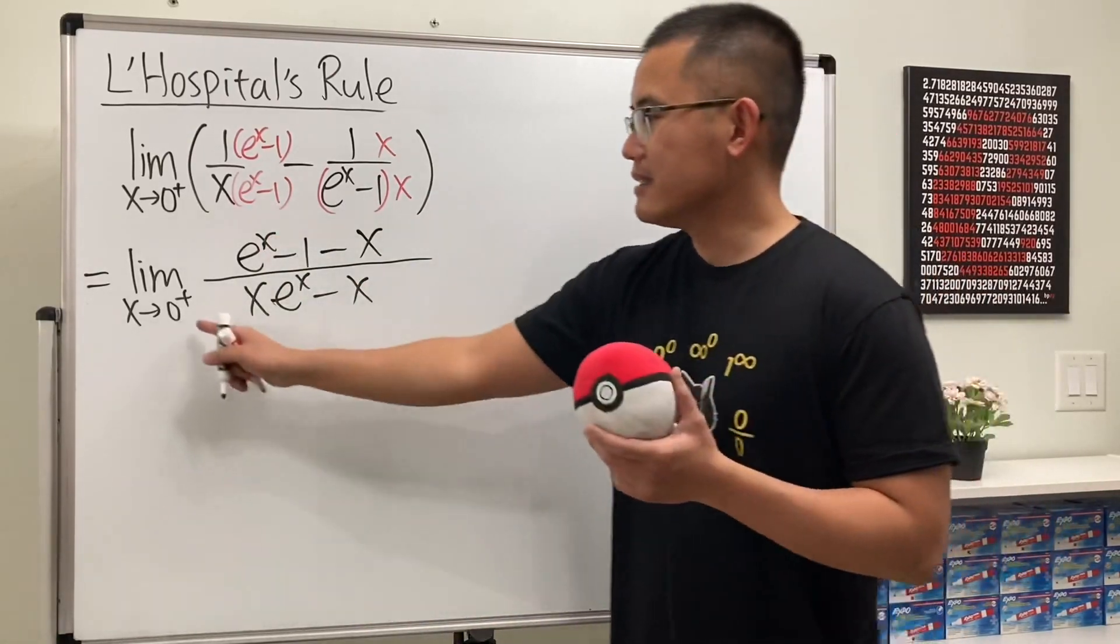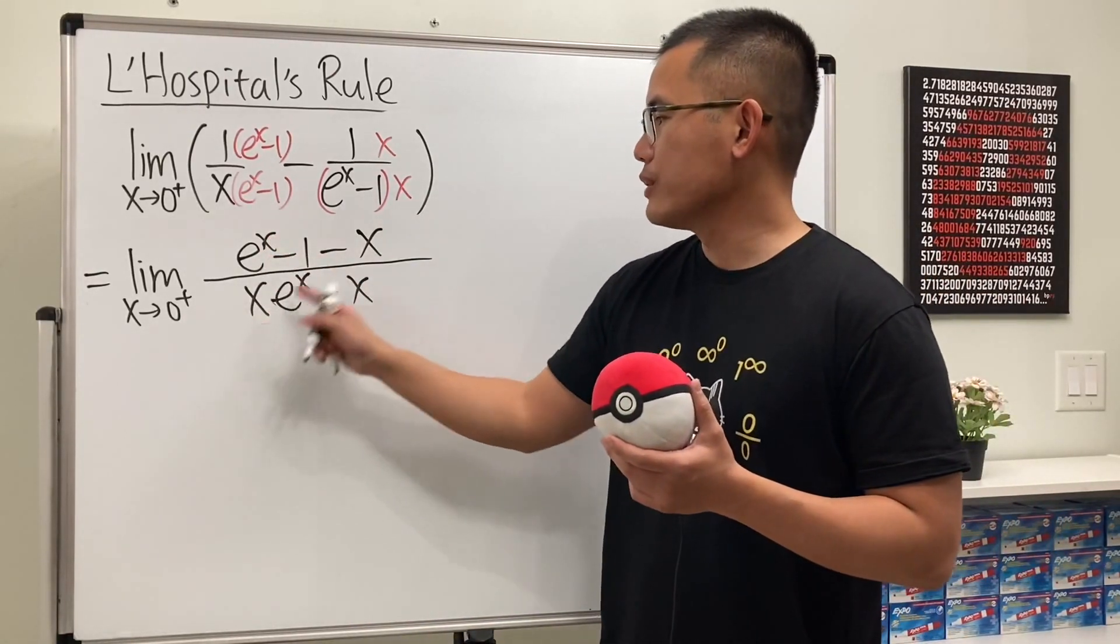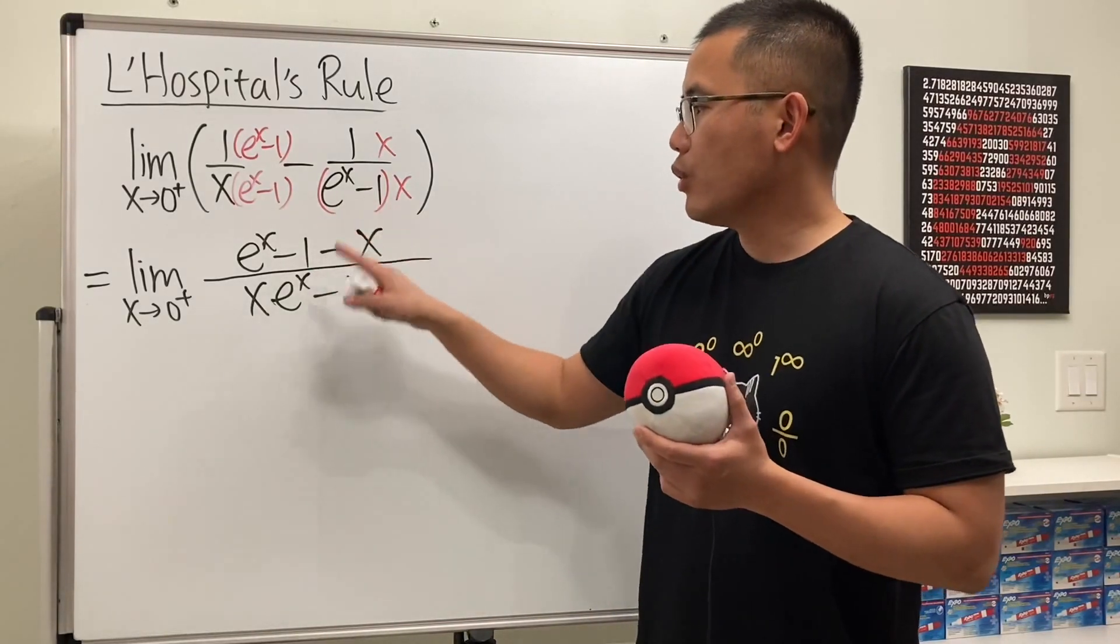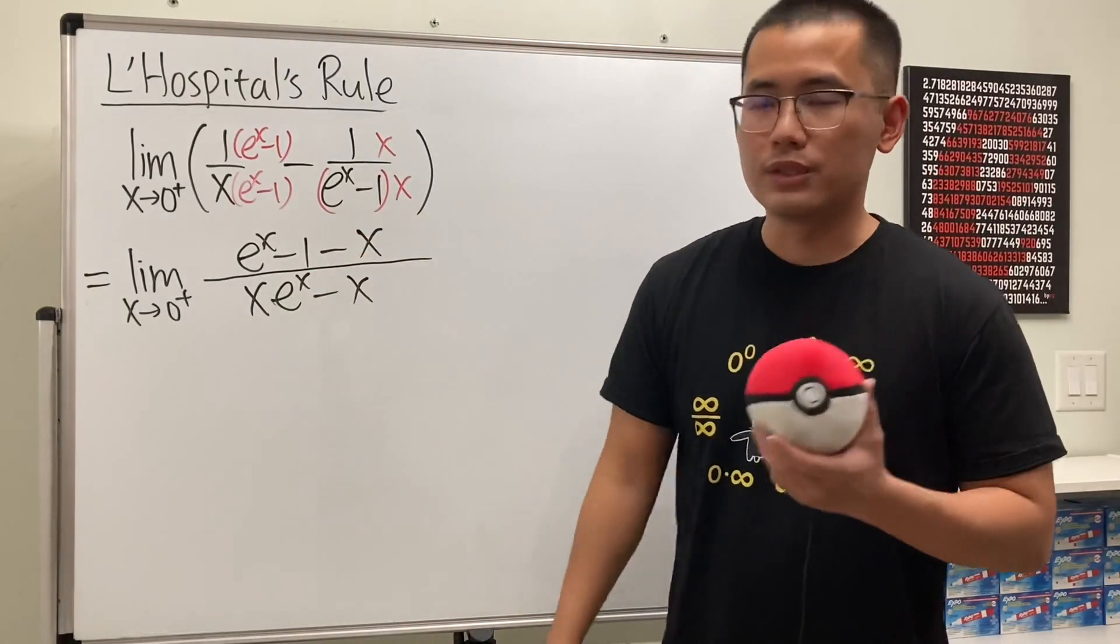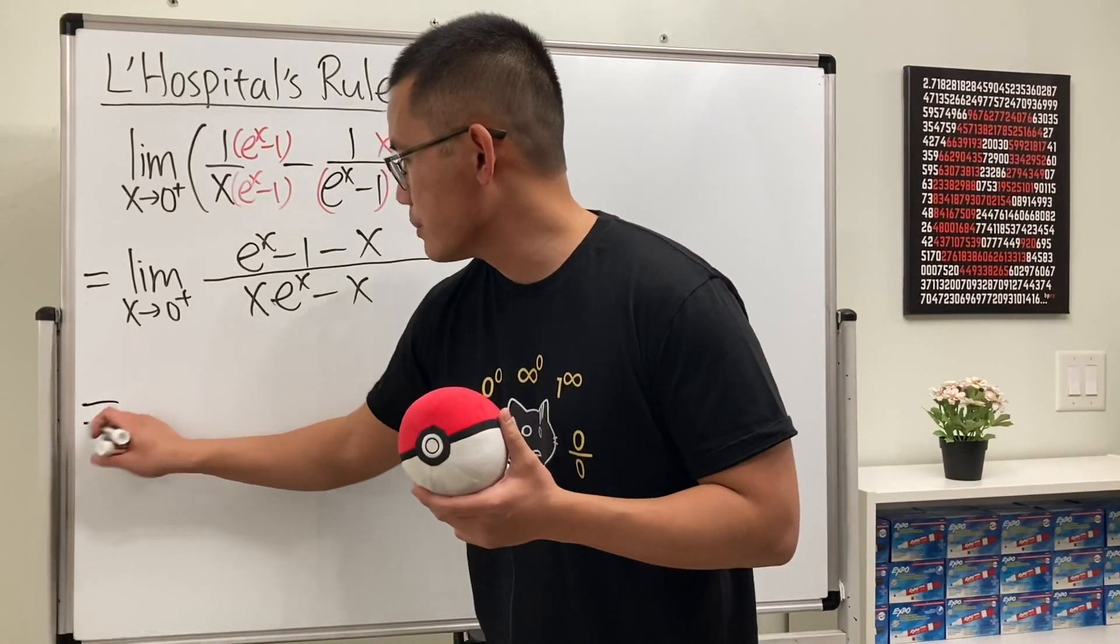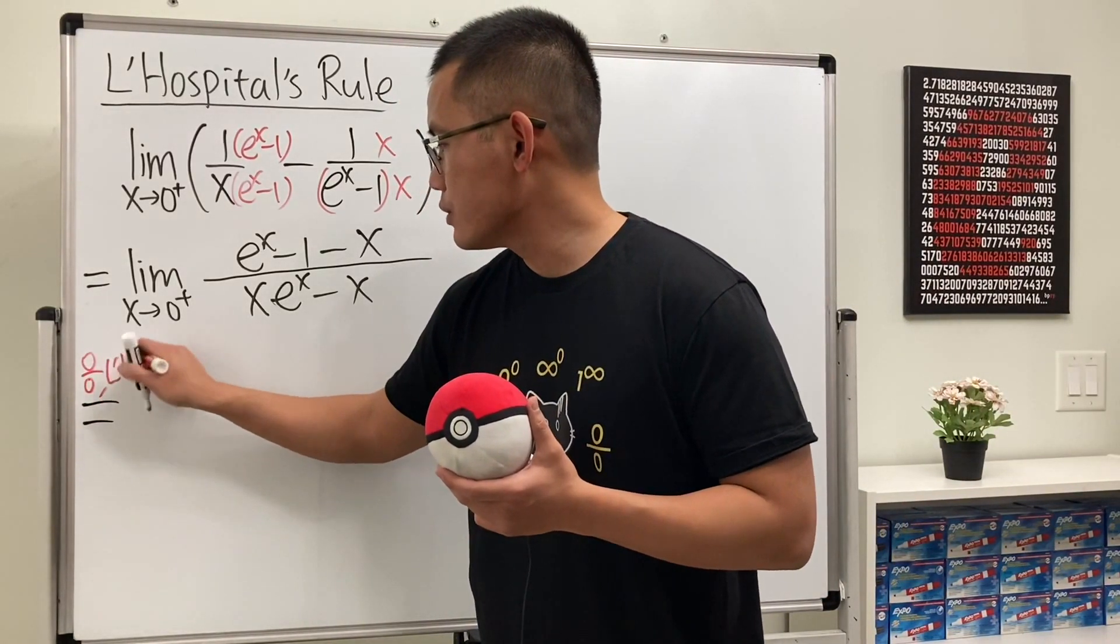And then if x is approaching 0, and I just put 0 into all the x's, then you'll see it will be 0 over 0. So we are going to use L'Hôpital's rule. Let me just put that down: 0 over 0, L'Hôpital's rule.